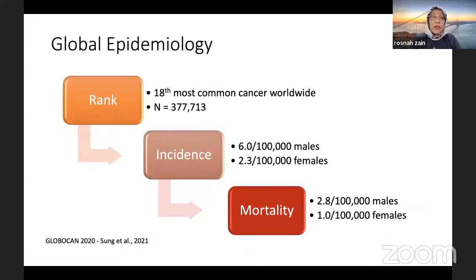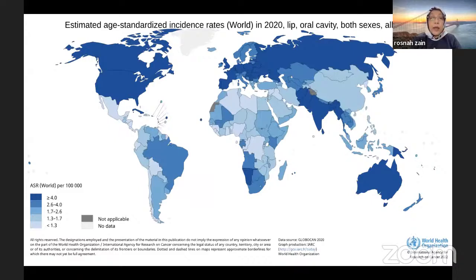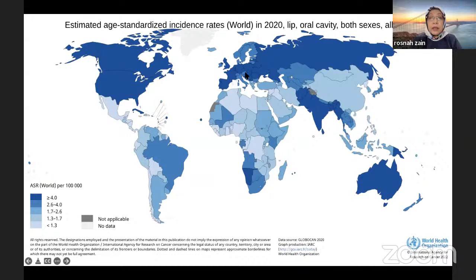As an introduction, I'll start with global epidemiology. Oral cancer is ranked as the 18th most common cancer worldwide, with about 377,713 cases. Incidence is higher in males at 6 per 100,000 compared to females at 2.3 per 100,000, and mortality is also higher for males. Looking at the map, the dark blue areas where age-standardised rate is highest include Australia, India, Southeast Asia, Europe, Russia, and North America.